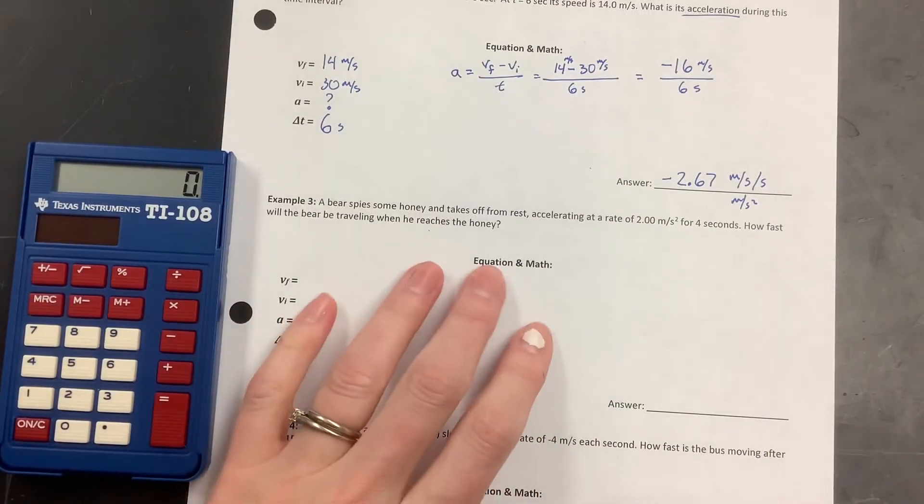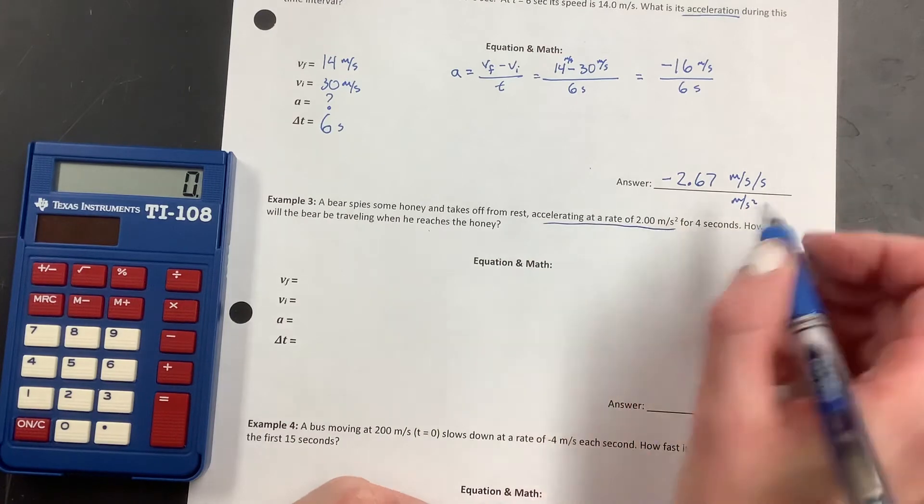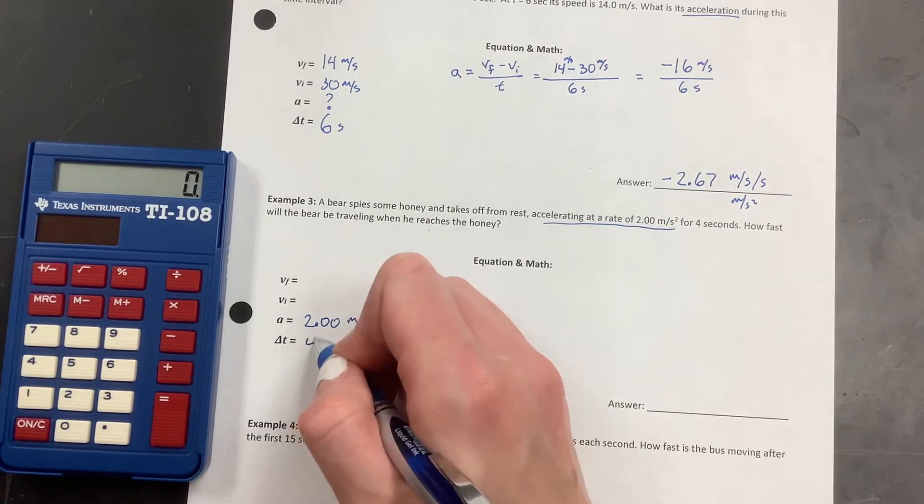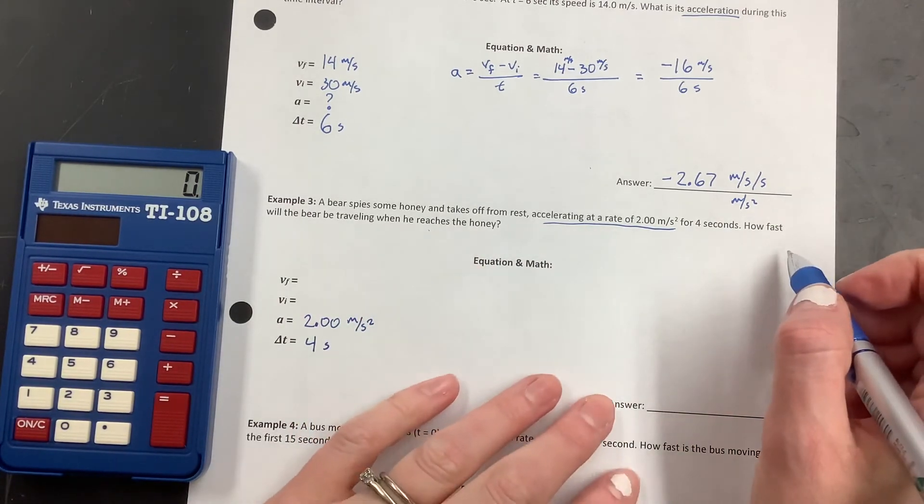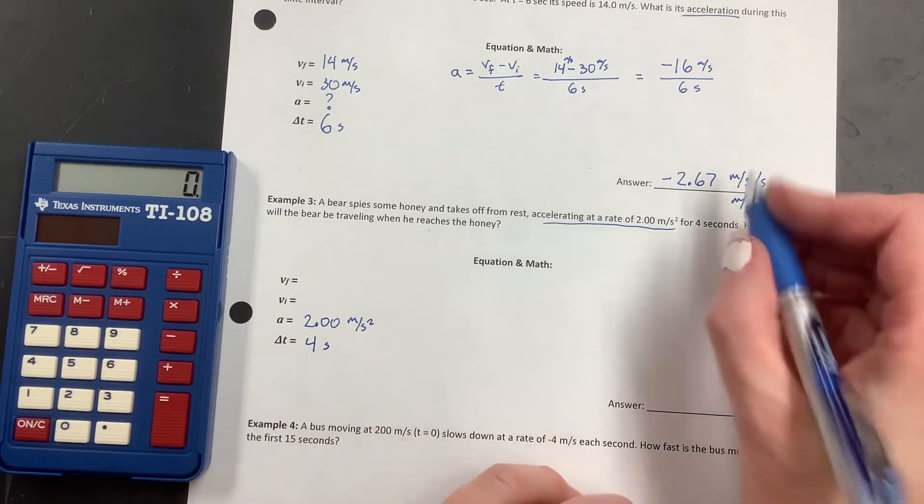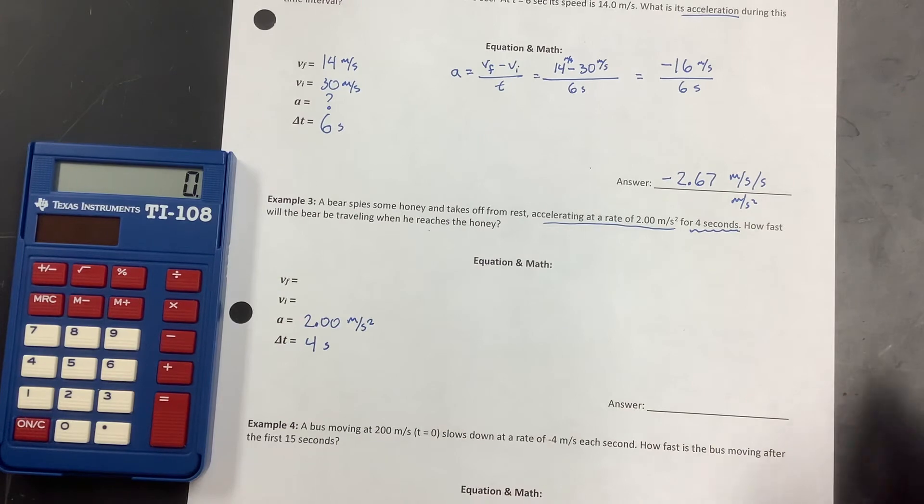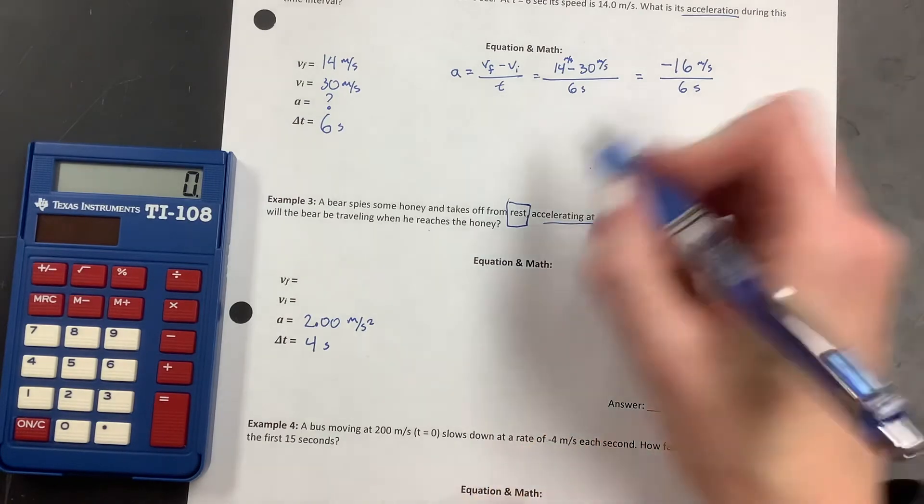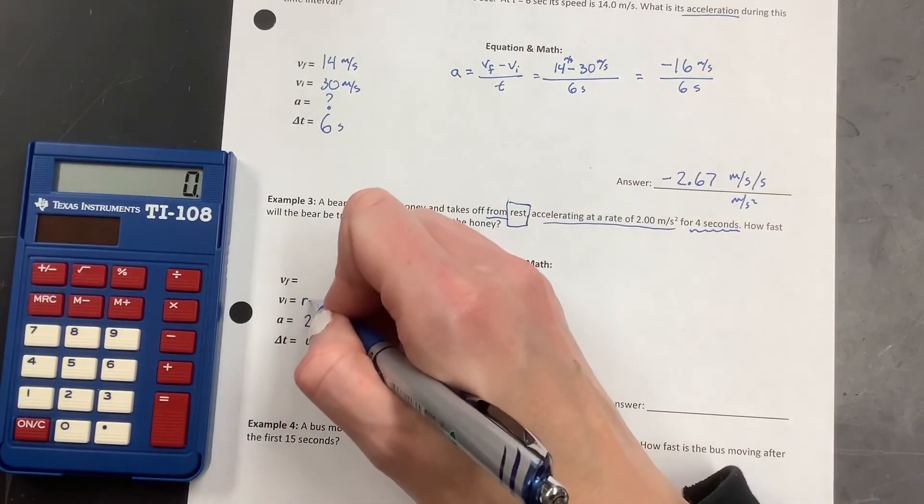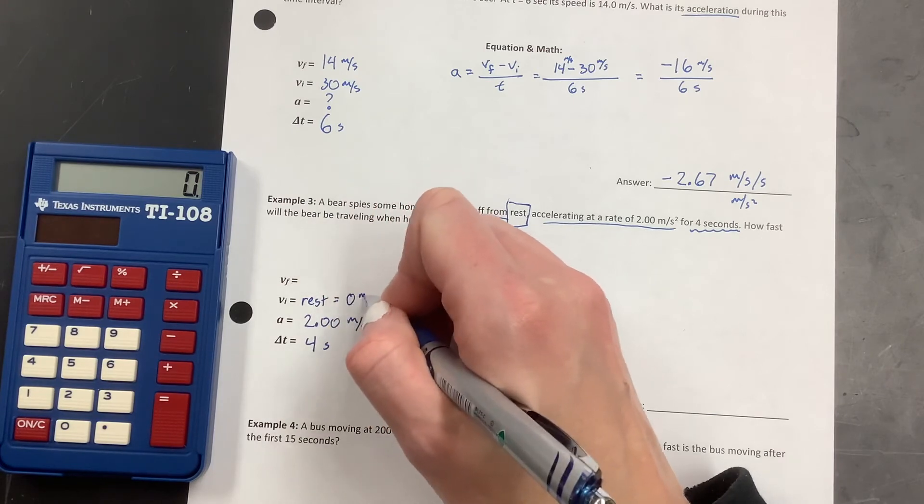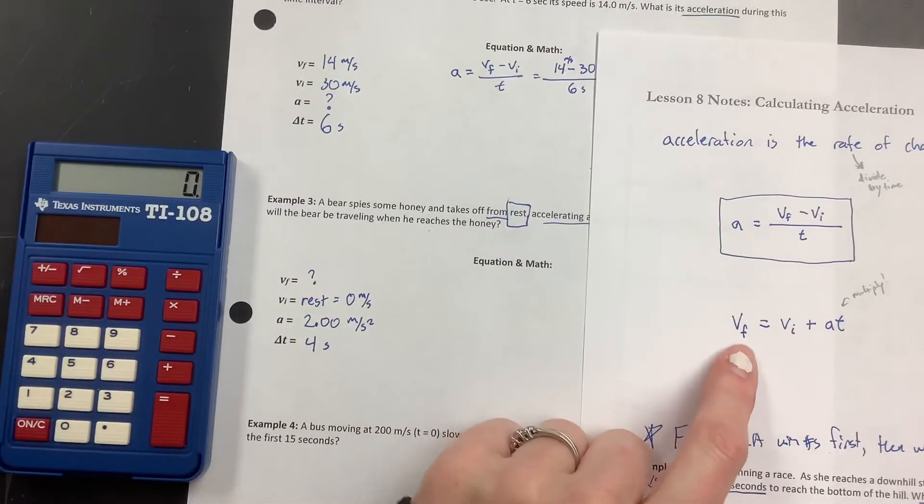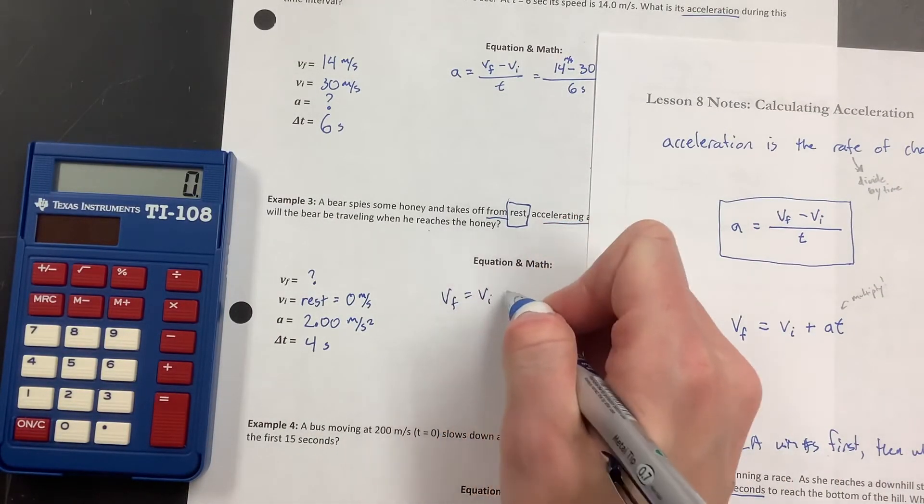The bear spies some honey and takes off accelerating. Oh, this one's giving me the acceleration at a rate of 2.0 meters per second squared. For four seconds. How fast will the bear be traveling when he reaches the honey? So did you notice that I've only got two numbers? A note. It says right here, rest. How fast are you going if you're resting? From rest, that's our initial velocity. Resting is 0 meters per second squared. And so we're looking for that VF. Now that formula we had is right here. VF equals VI plus AT. And we just have to remember to multiply those two.